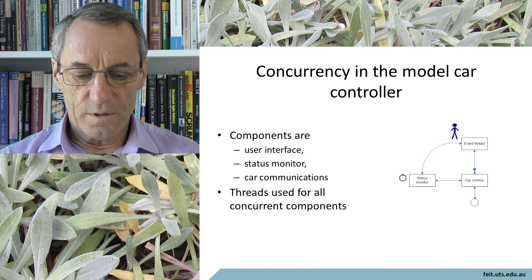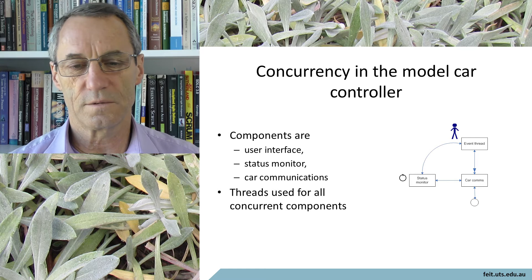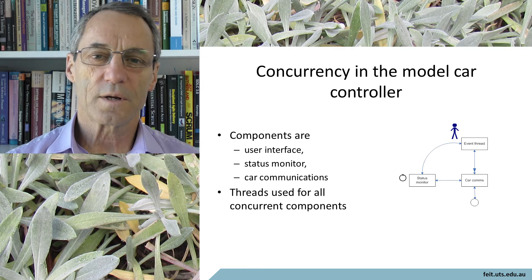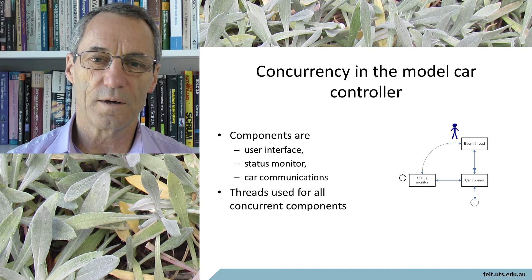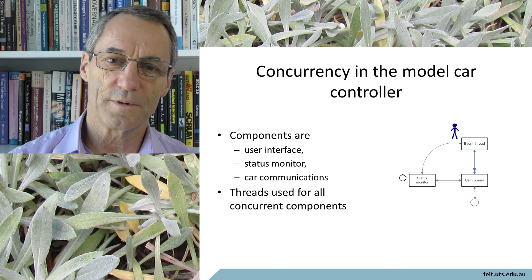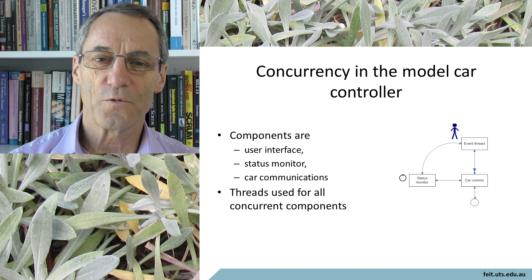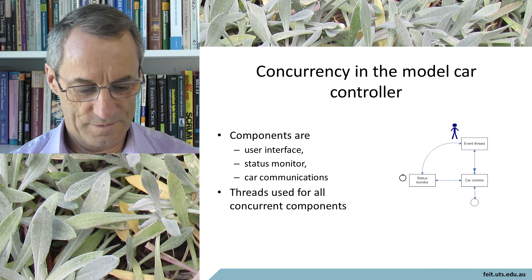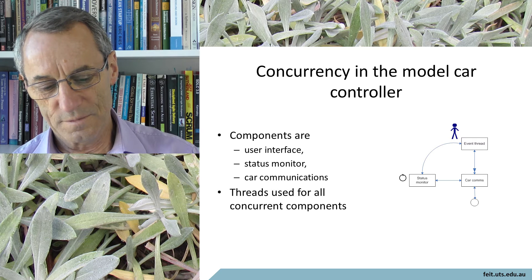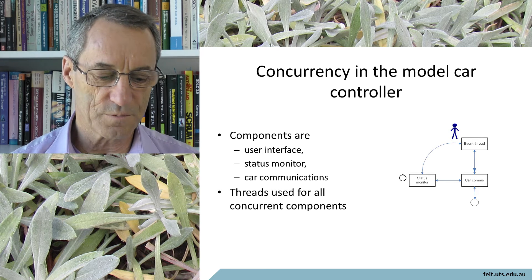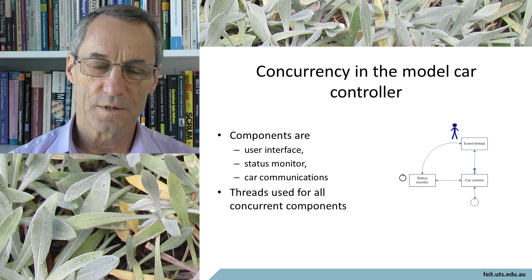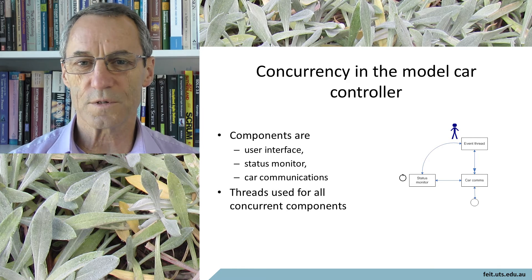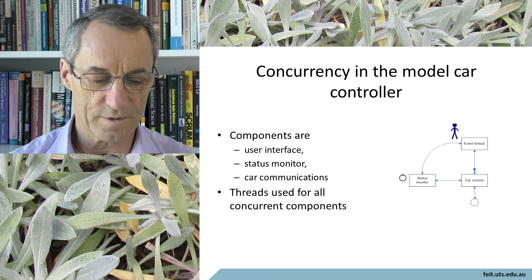The example here is a model car controller. We have a car and a controller with wireless communication between them. Clearly the processes on the car are going to be a separate subsystem — a separate process from the components on the controller. On the controller we have a user interface, a status monitor, and car communications. These may well have to be separate components on the controller, never mind the fact the car is separate as well.